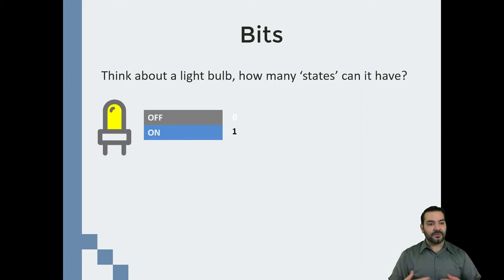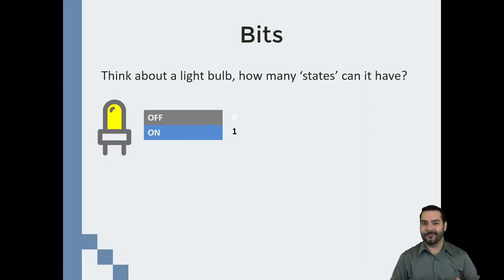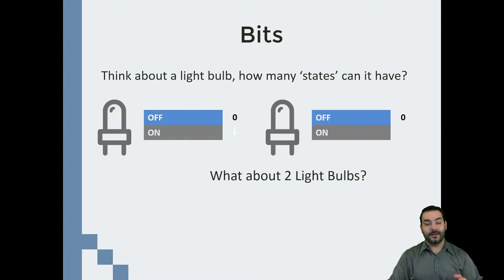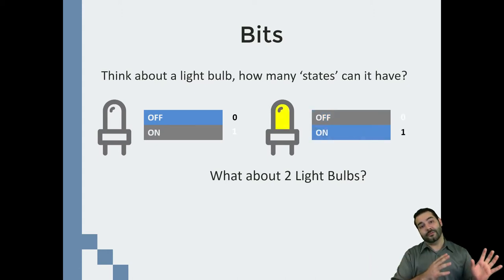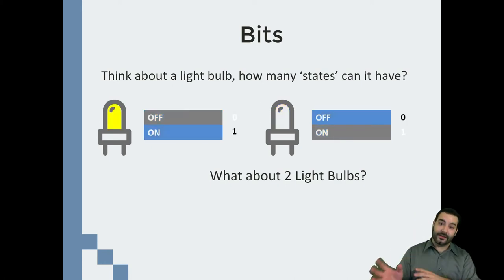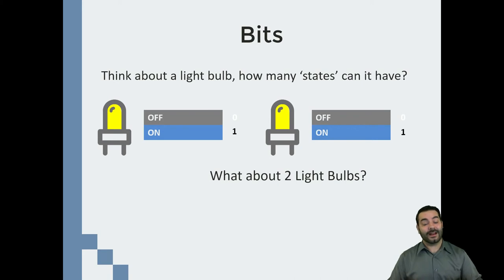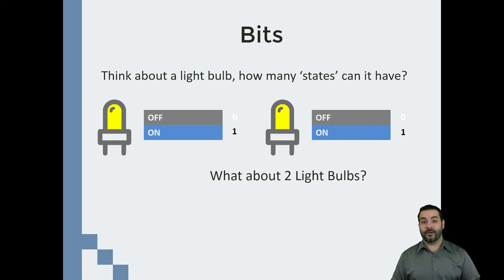That's just with one bit — that's one light bulb. But what happens if I start to get multiple light bulbs? Let's think about two light bulbs. How many states do I have? Well, I have both of them being off, one of them being on, the other one being on, and then finally both being on. What happened is this actually doubled — I went from having only two states to four states.